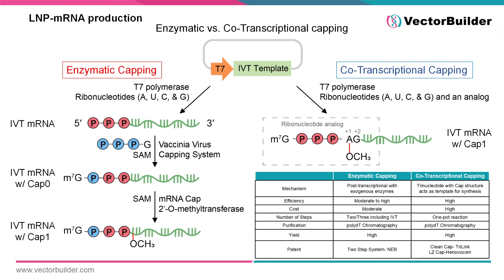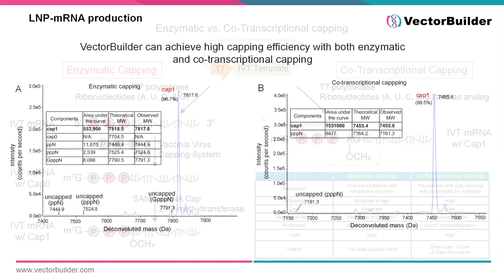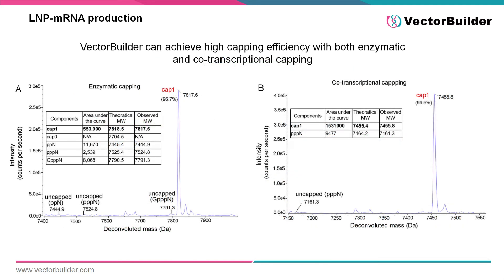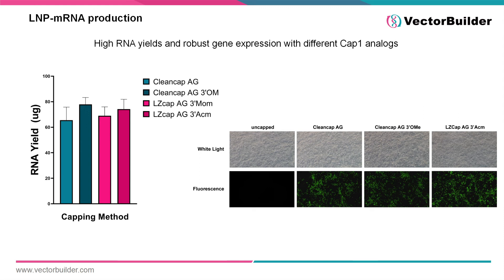In contrast, co-transcriptional capping is performed with the addition of a trinucleotide analog that contains the cap structure, acting as the initiator for transcription of the IVT mRNA. Both methods have their advantages and drawbacks; however, the most important factor is the capping efficiency of the chosen method. At VectorBuilder, we can achieve highly efficient capping for both enzymatic and co-transcriptional systems. In addition, as different cap structures are developed, our team continues to optimize our production for various mRNA caps, allowing researchers to choose from a variety of options for their IVT mRNA therapeutic. Regardless of choice, high capping efficiency can be achieved. We can also achieve high yields of mRNA production in a variety of cap structures and have validated their function in vivo and in vitro.